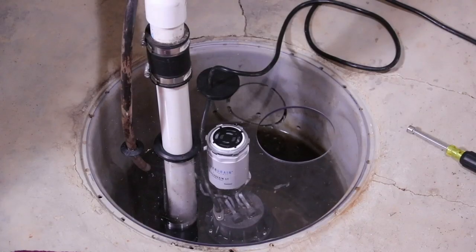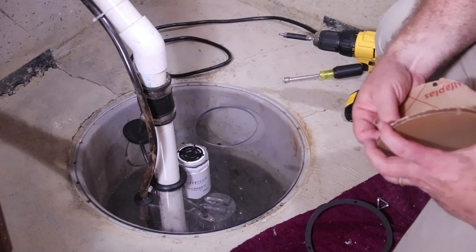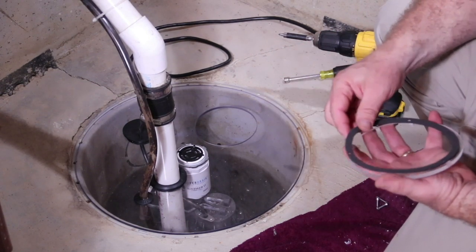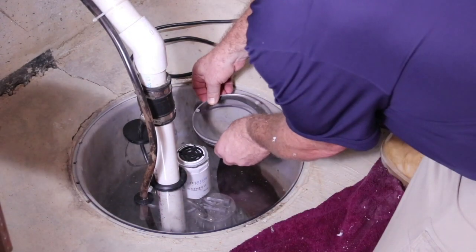pry the inlet grate off with a flathead screwdriver, remove the ball with a spoon, and clean the drain. Reinstall the ball and inlet grate.